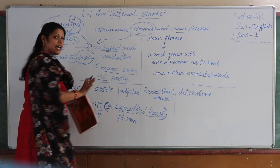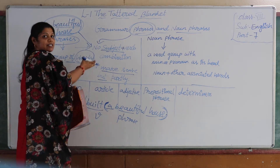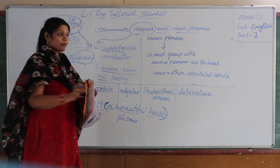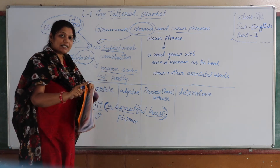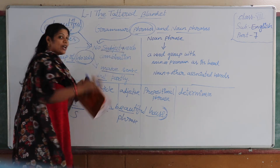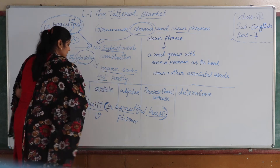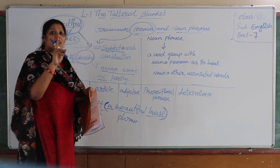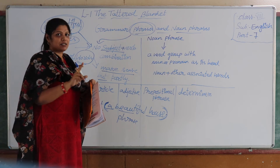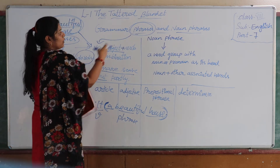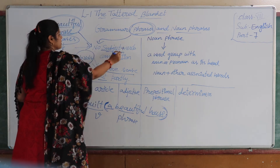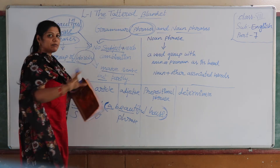Okay children. I hope it has been clear so far. What is the difference between a phrase and a sentence? A phrase is only a few words which doesn't give us complete meaning. When I use that phrase with a subject and verb combination, then only it will become a sentence. So a phrase is a part of a sentence, but not a complete sentence. I hope this phrase part is very clear with you.